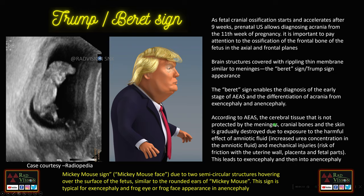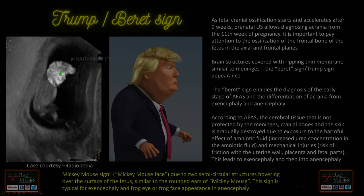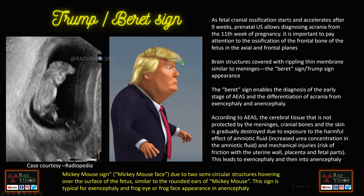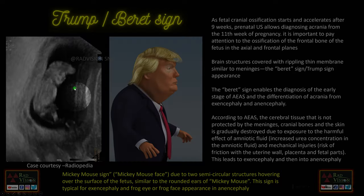Next is the Trump sign or Barrett sign. Fetal cranial ossification normally starts at nine weeks and by eleven weeks you can easily see ossification of the frontal bone in the axial plane. In this case, there is no ossification of the frontal bone and the brain structures are covered by a very thin membrane similar to meninges — this is the classical Trump or Barrett sign. Whenever you see this Barrett sign, definitely suspect acrania, because it mimics the hair of Trump.